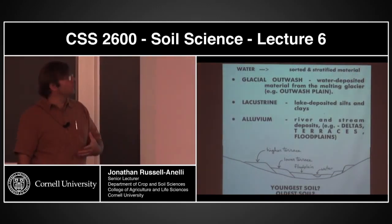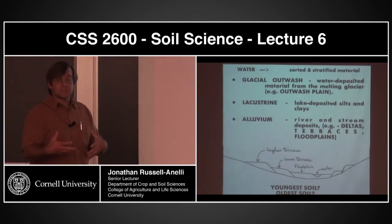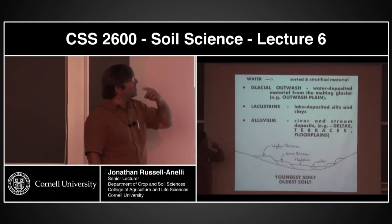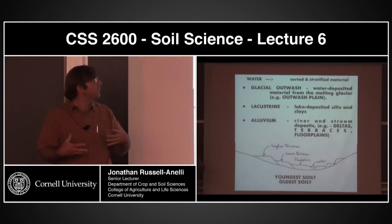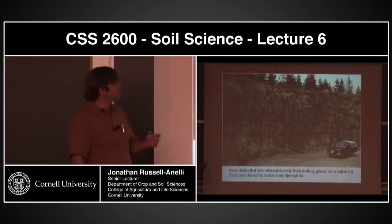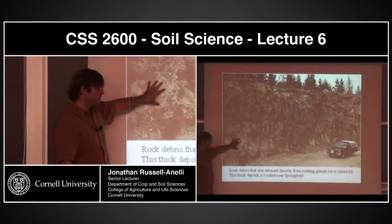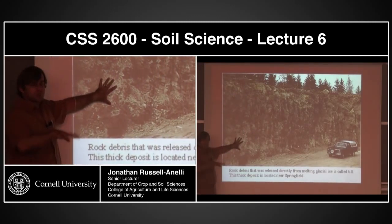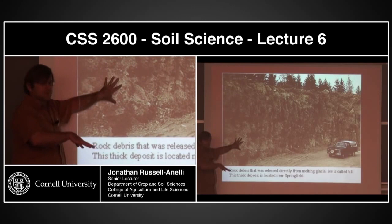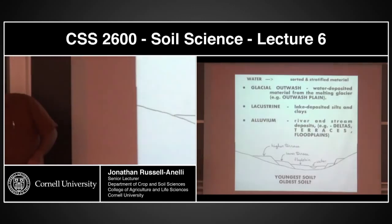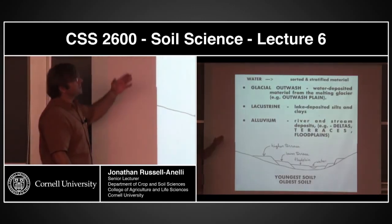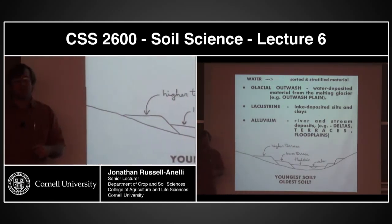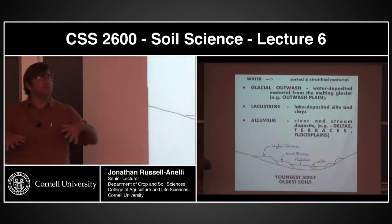We also have water transportation — water is transporting as well as weathering, just as ice and wind are. We have glacial outwash: water deposits coming from a melting glacier, a mix of water-dropped and ice-dropped material. We have lacustrine deposits — clay, the lake-laid stuff. And then we have alluvial material, which is from streams and floods moving things.